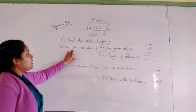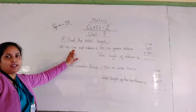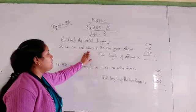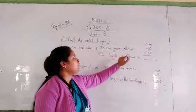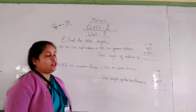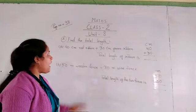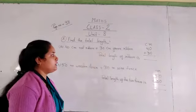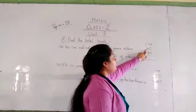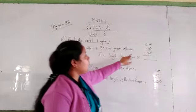A: 40 cm. Here CM stands for cm, the short form of centimeter. 40 cm red ribbon plus 30 cm green ribbon. We need to find the total length of the ribbon. So we add both ribbons' lengths. First we write cm, then we write the first ribbon's length. Red ribbon's length is 40 cm.